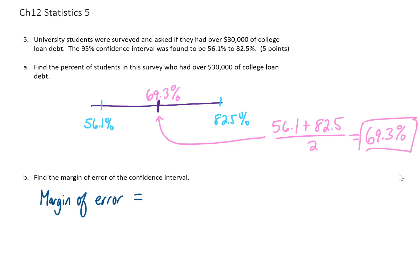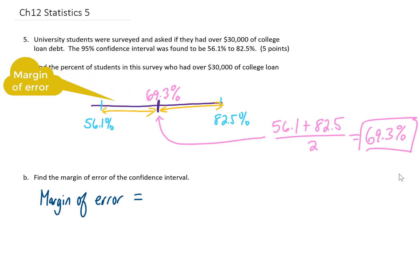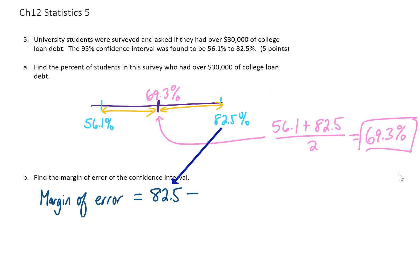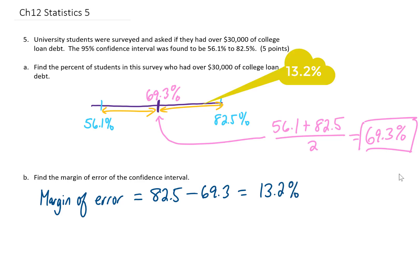That is the answer. Now the margin of error in this survey is just going to be the distance between the middle value and the upper bound of our confidence interval, or the middle value and the lower bound. To find that margin of error, I'm just going to subtract 82.5 — the largest value — minus 69.3, the middle value in our confidence interval. That gives me 13.2% as our margin of error.